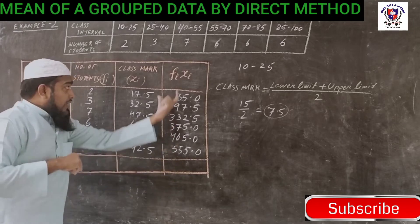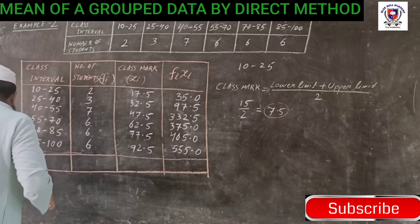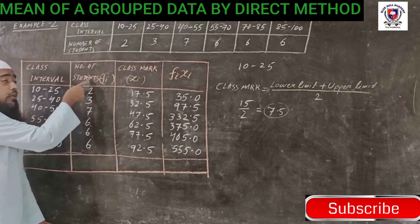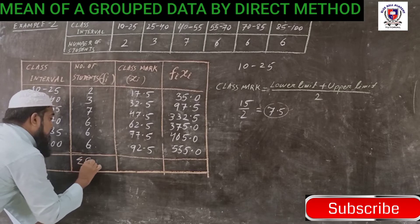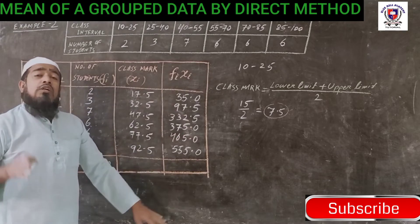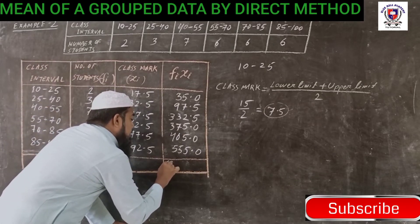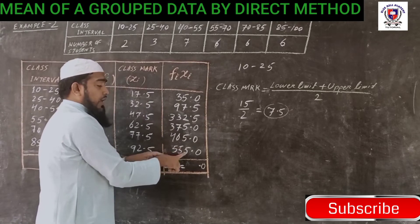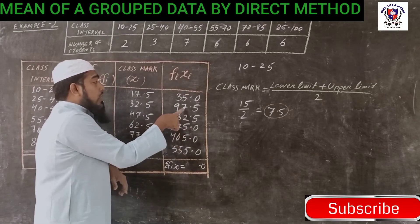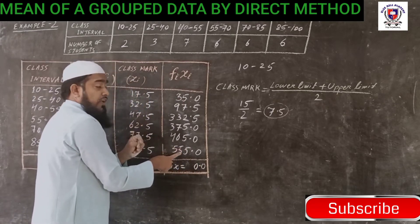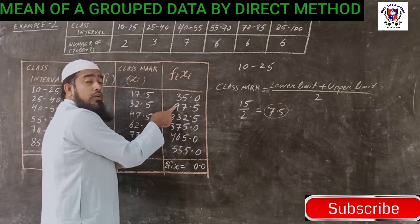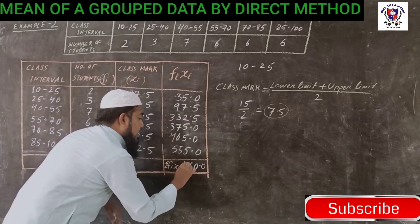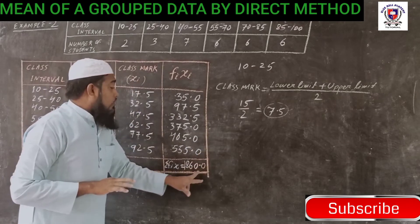Now we need to find the sum of fi times xi like we have done earlier. First, sum of fi: 2 plus 3 plus 7 is 12, plus 6 plus 6 plus 6 is 18, plus 12, so 30. We can say sigma fi equals 30. Next we have to find sigma fi times xi. Now we add: 5 plus 5 is 0, 1 carry. 1 plus 5 is 6, 11, 16, 18, 25, 30, 0, 3 carry. 3 plus 5 is 8, 14, 21, 24, 33, 36, 3 carry. 3 plus 5 is 8, plus 4 is 12, 15, 18. So 1860.